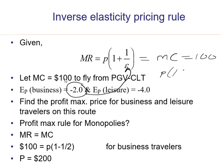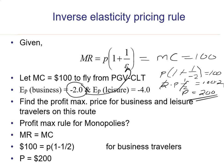Let's do the algebra: price times (1 + 1/(-2)) equals 100. That simplifies to price times (1/2) equals 100. Multiplying both sides by 2, the one-half and 2 cancel, giving us price equals 100 times 2, or $200. That is the profit-maximizing price for the business traveler.